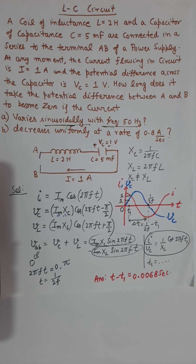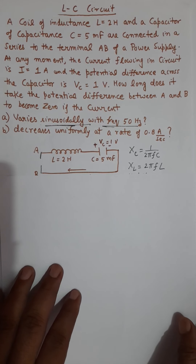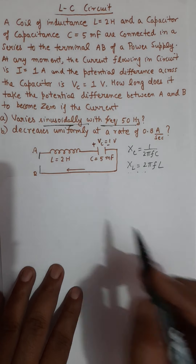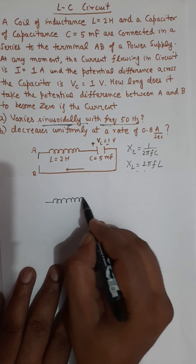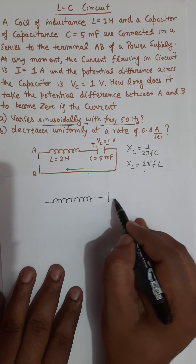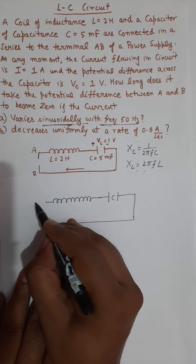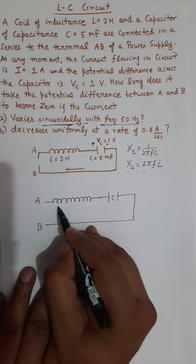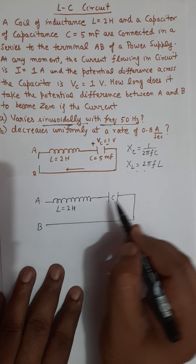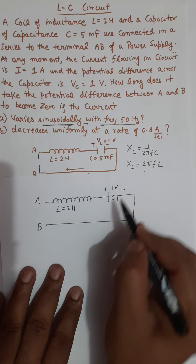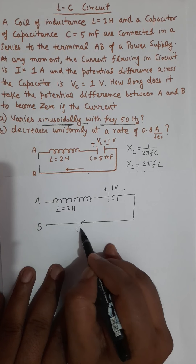Now the second part of this question. In part B, the nature of current is different for the same circuit. I will redraw the circuit: there is the capacitor which is 5 millifarad, point A and point B, and inductance is 2 henry. The voltage is given as 1 volt and the current flowing in this circuit is given as 1 ampere. But now in part B, the current decreases uniformly at the rate of 0.8.